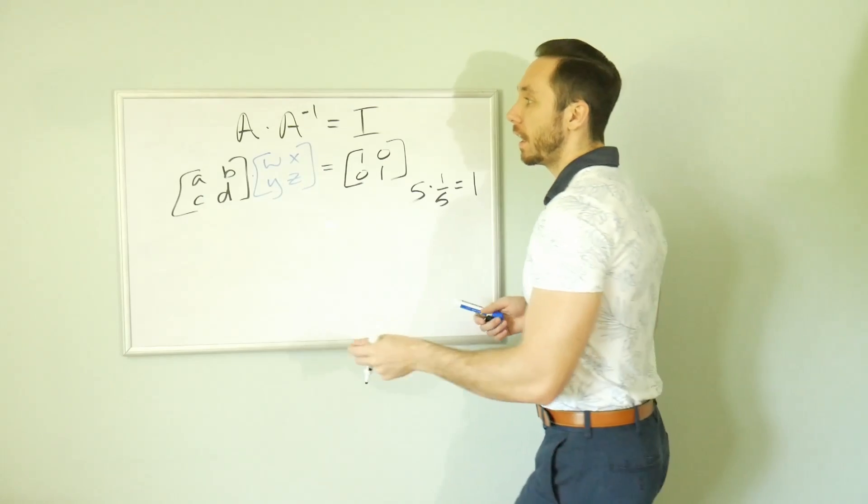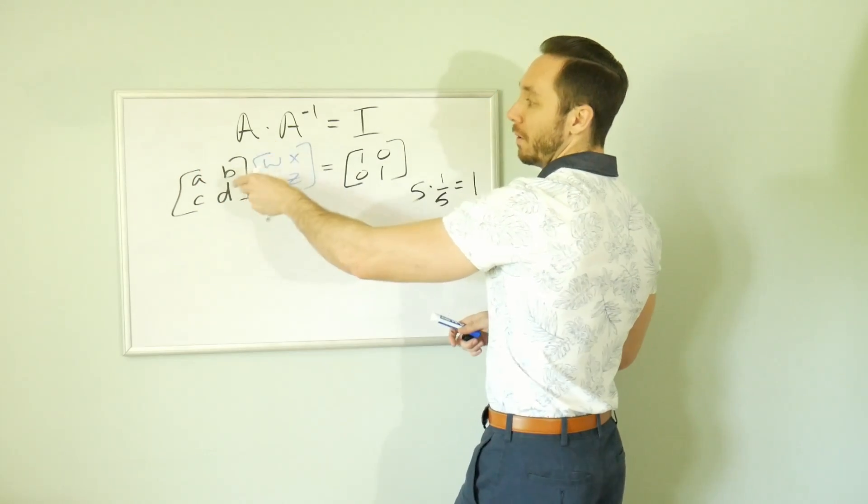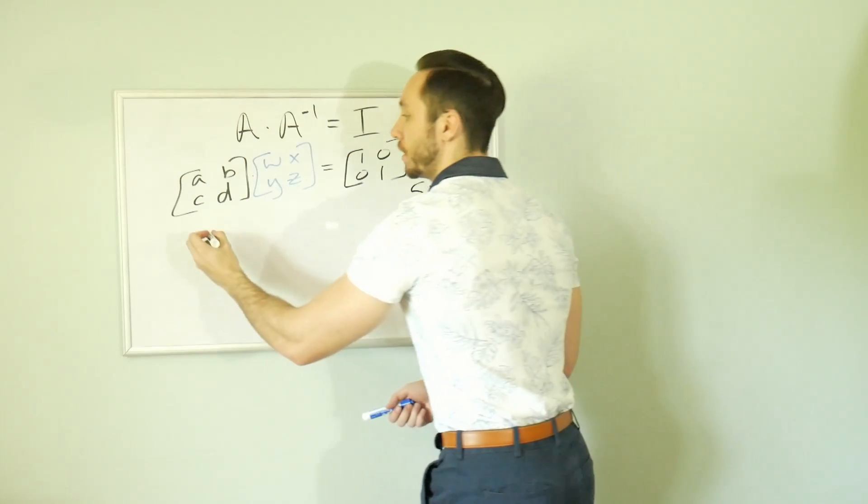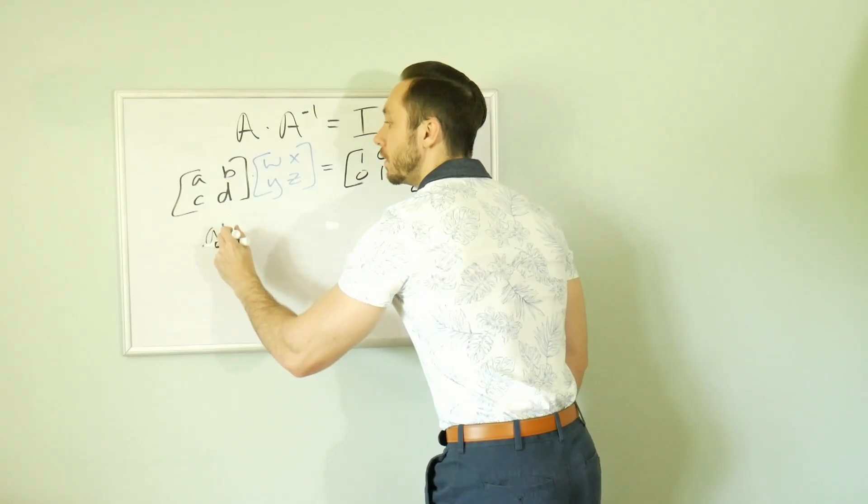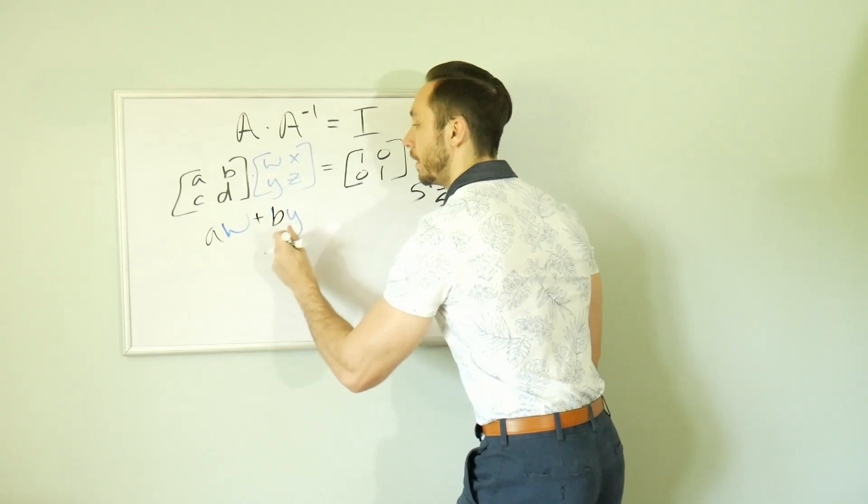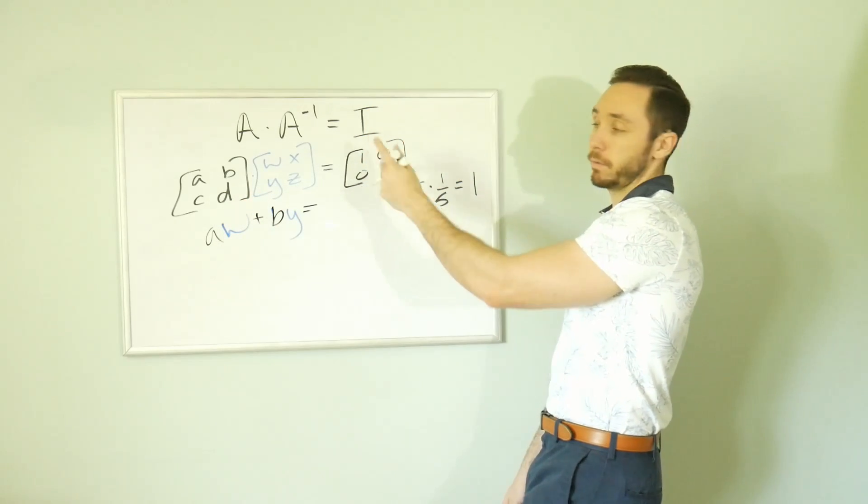Well, we can matrix multiply. We know what this product should come out to. It should come out to the identity matrix for a two by two. Let's do that. We can matrix multiply here. Here we can take that top row and multiply it by the leftmost column. So A, B times that W, Y. So we should get AW plus BY. And that should equal top left, which is one.